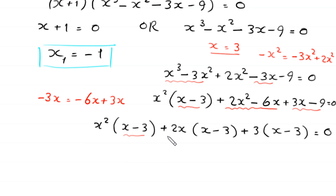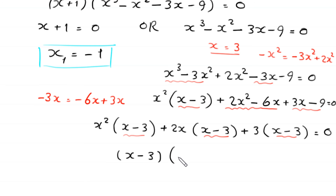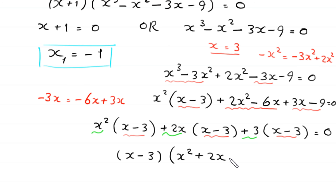Since (x - 3) is common in all terms, we factor it out to get (x - 3)(x² + 2x + 3) = 0.